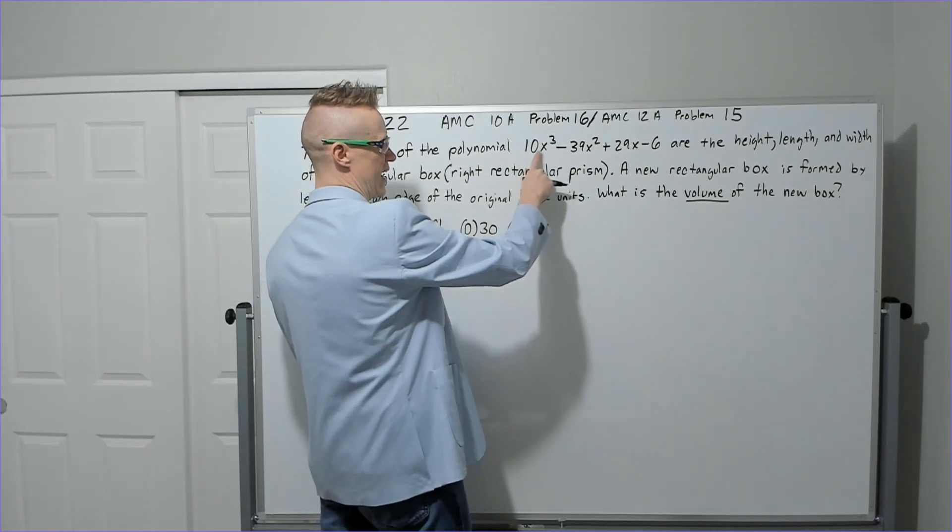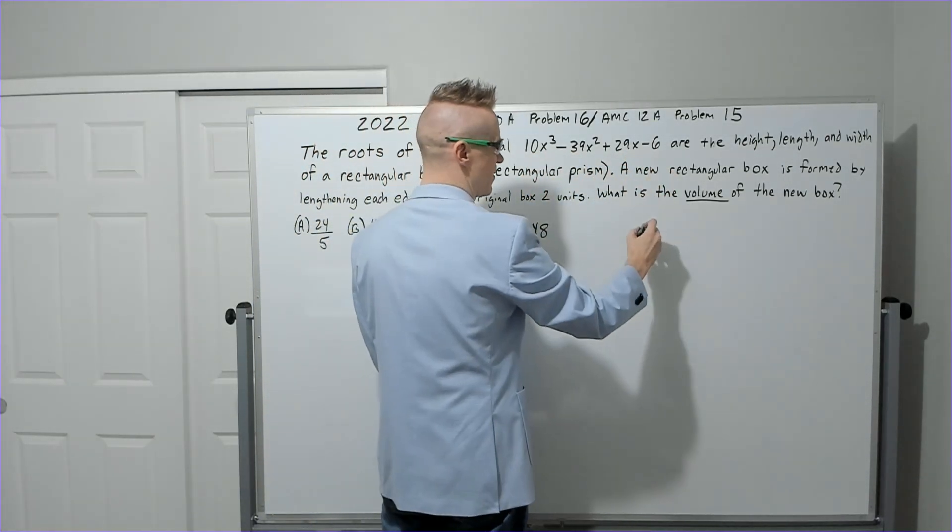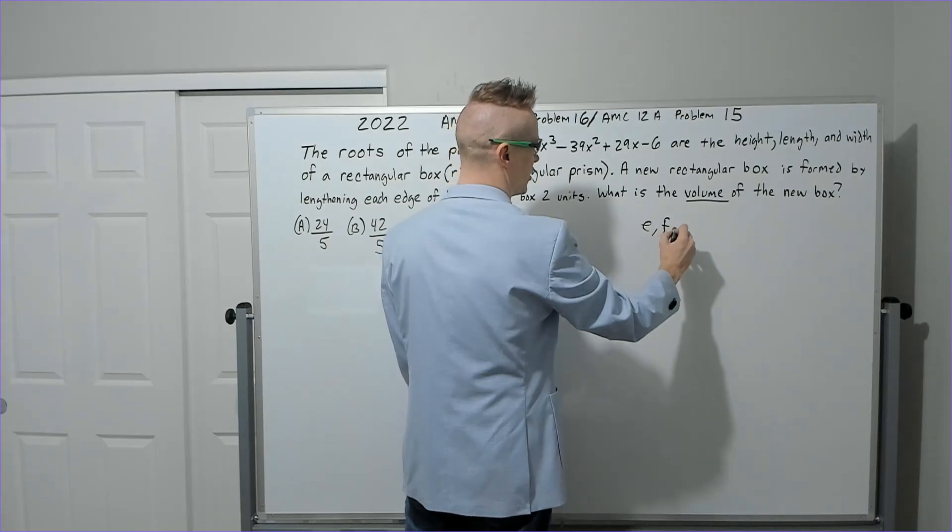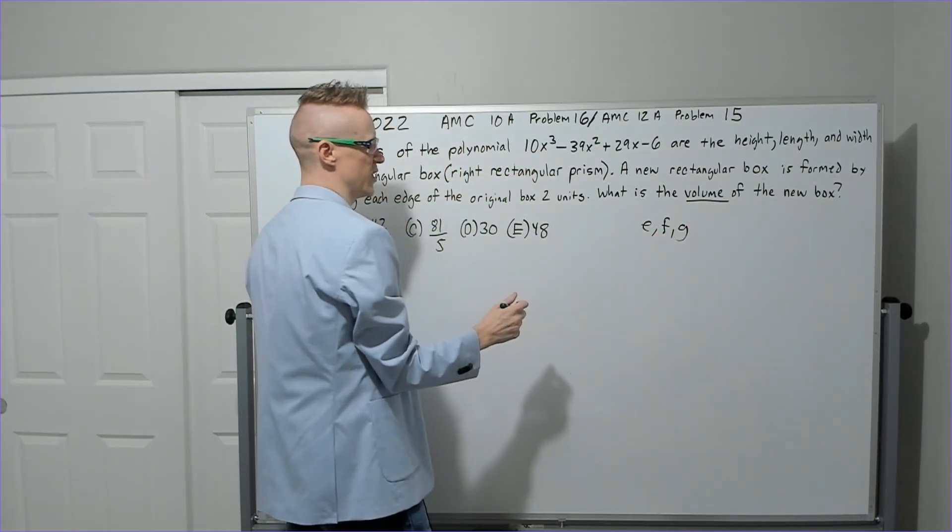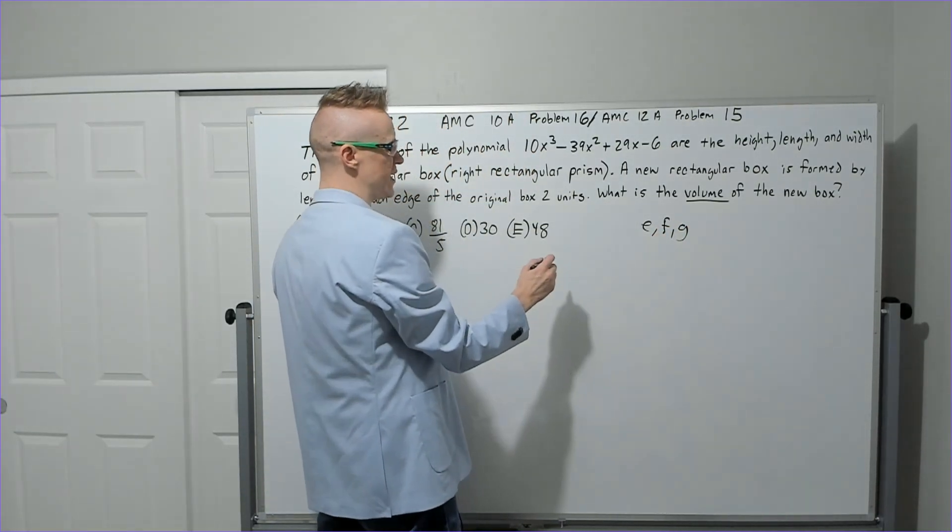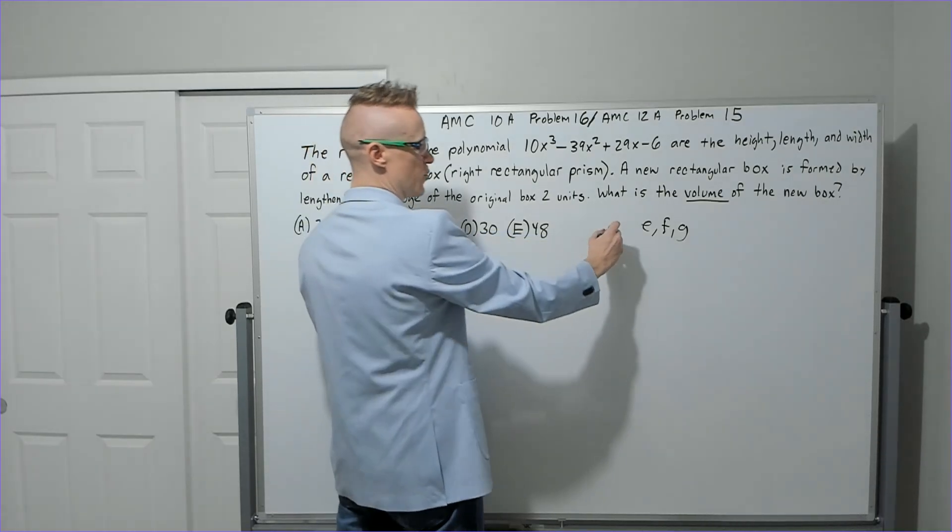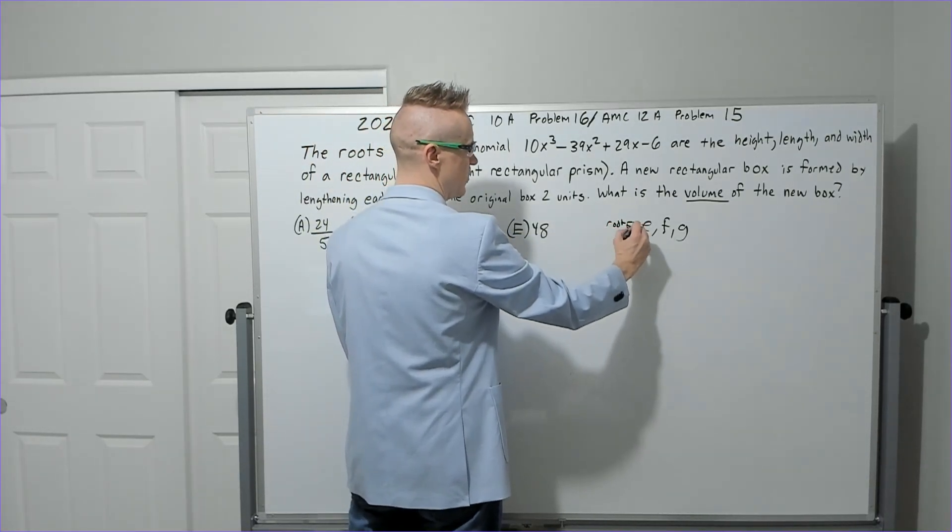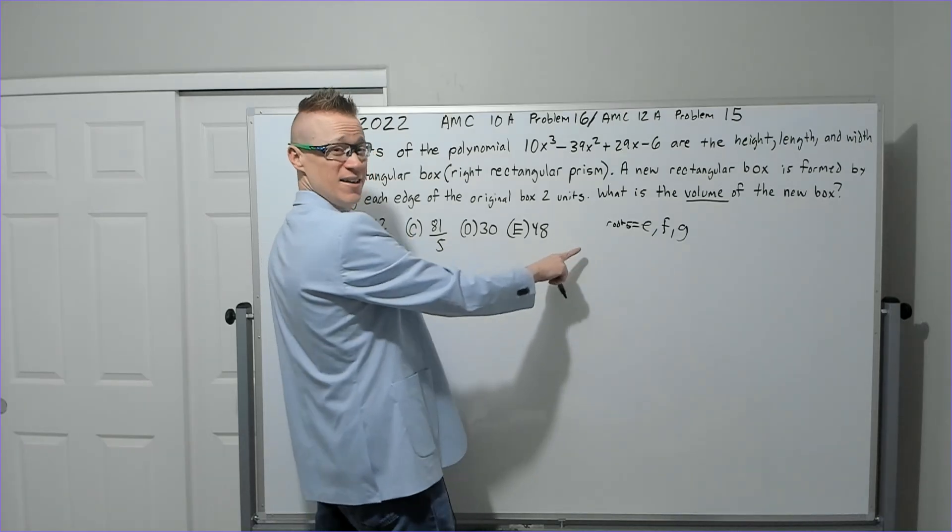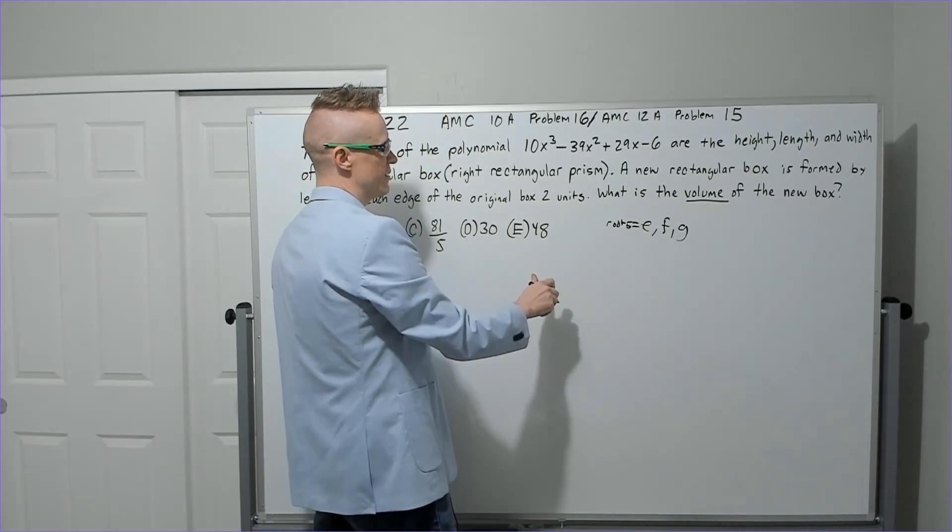So first, this is like a, b, c, and d, so I'm going to use the letters e, f, and g to avoid confusion. We know that the product of e, f, and g—these are the roots, okay.